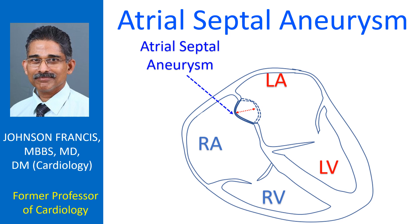It is one of the predisposing factors for paradoxical embolism and stroke. Atrial septal aneurysm can occur in up to 2% of the population.